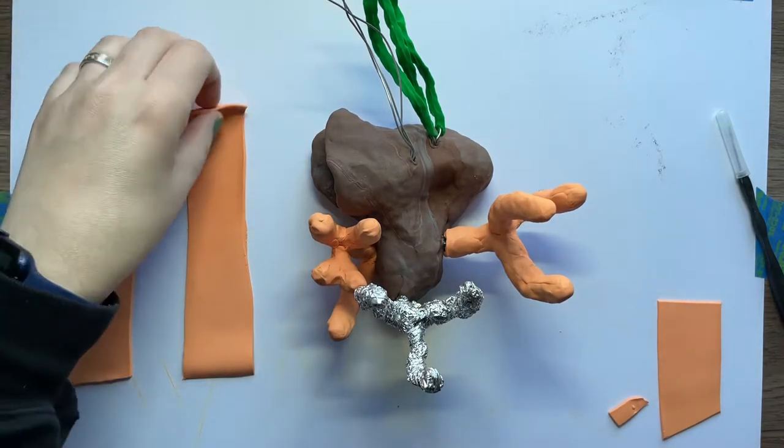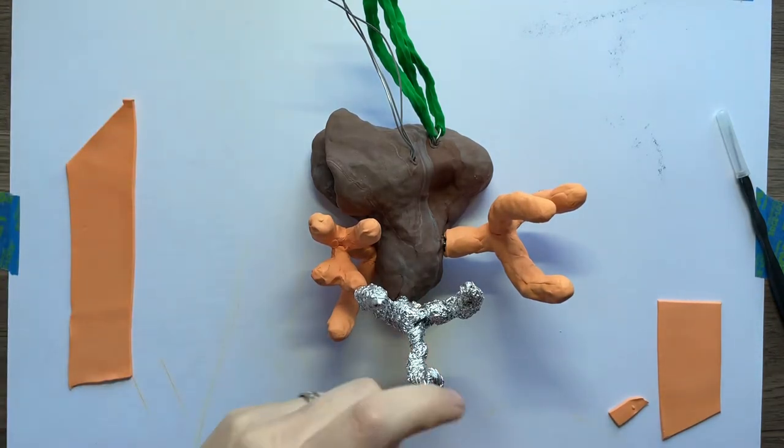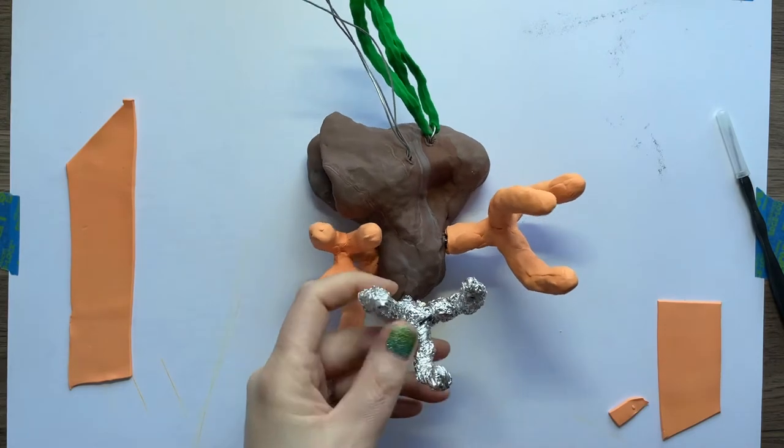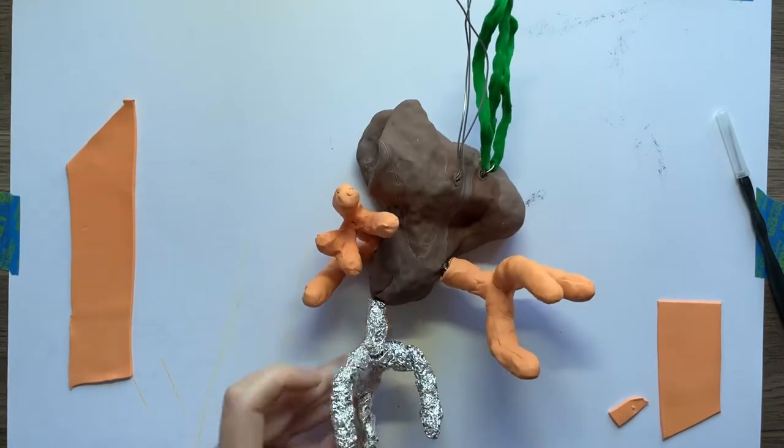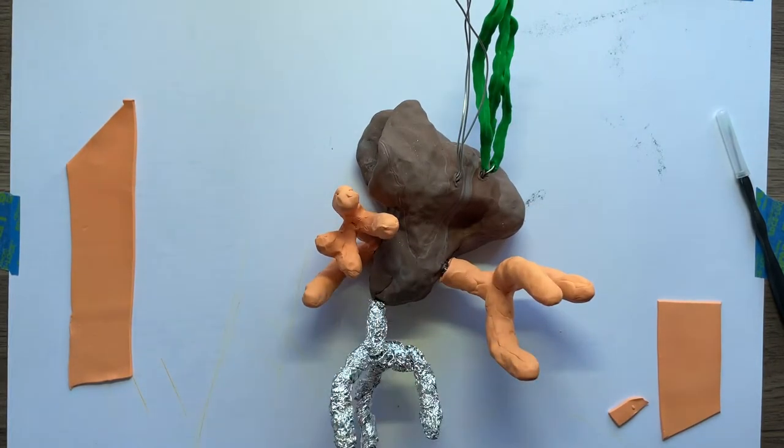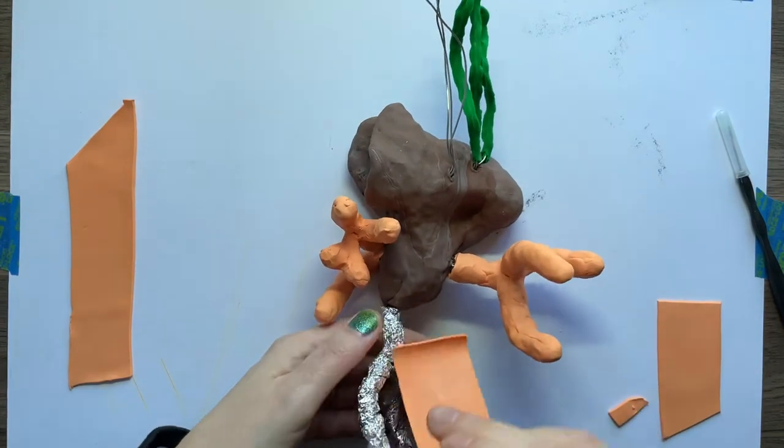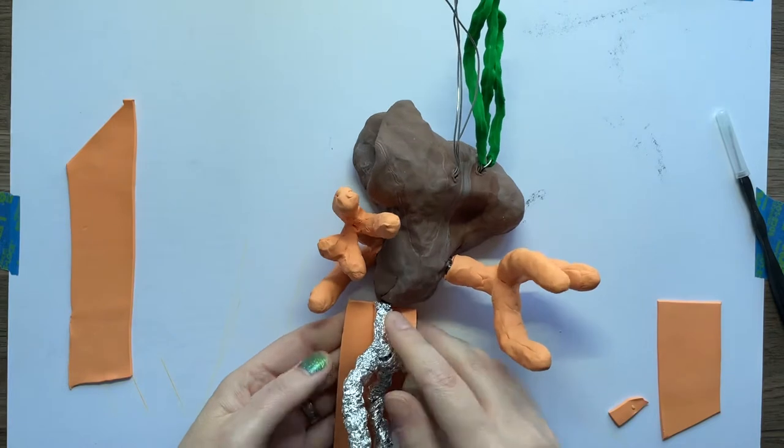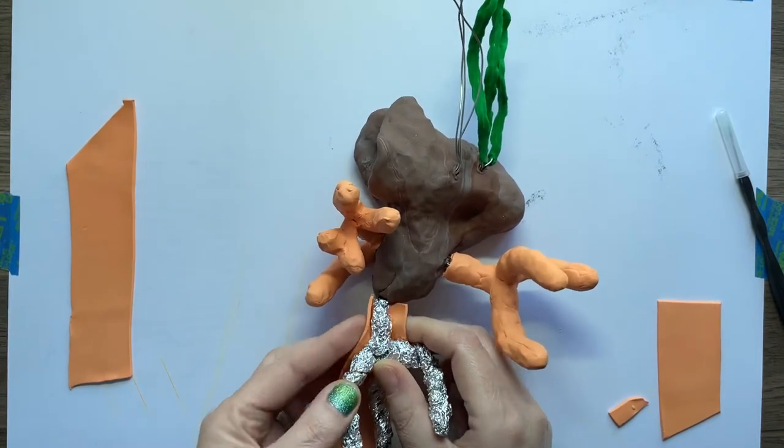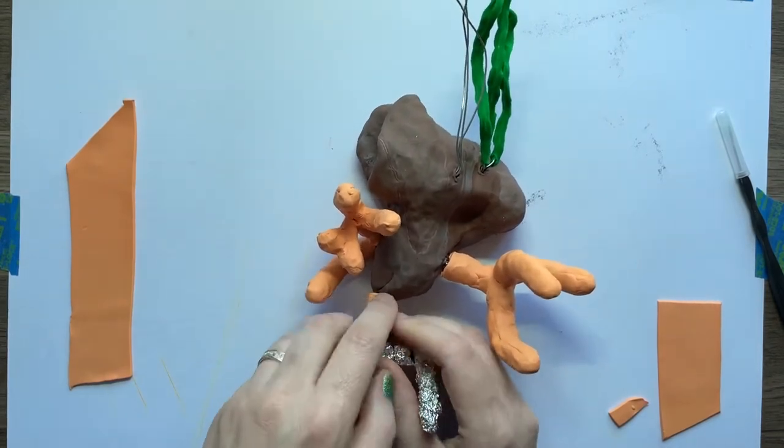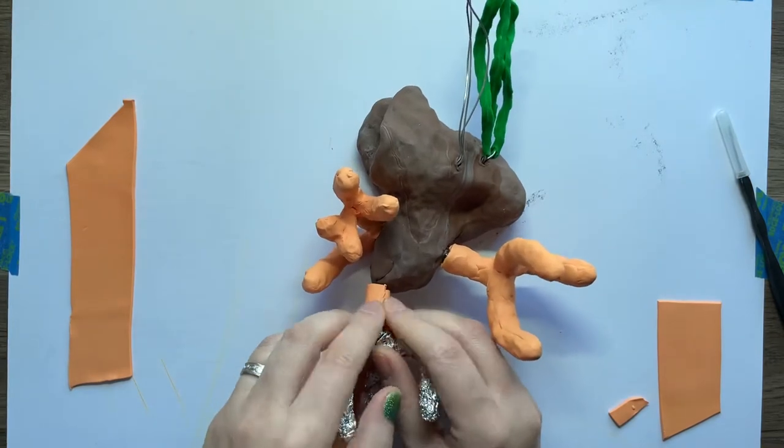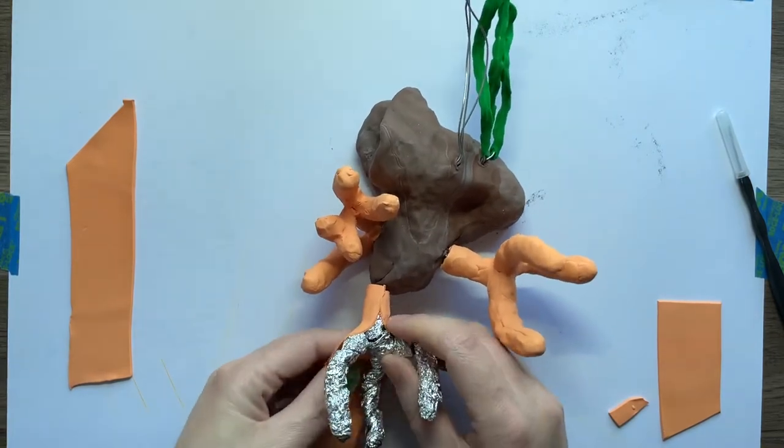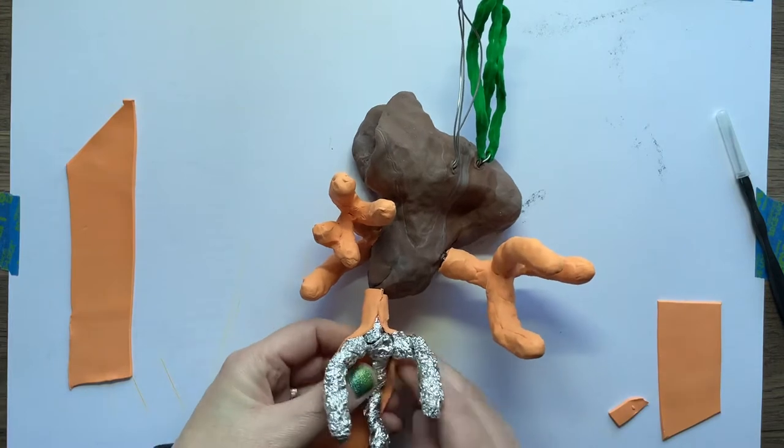You can see I've already done two of them, so I'm just finishing off this third one. When I go to do this, I'm going to start kind of at the base. I'm going to wrap it around, and if it doesn't touch all the way that's okay. If it does, great, and if it doesn't, that's fine too.